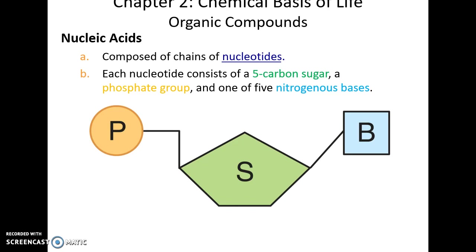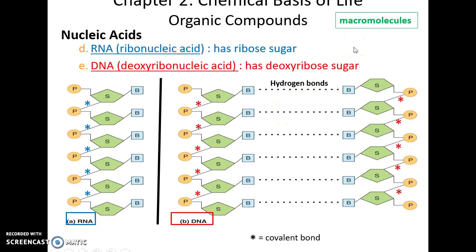Nucleic acids are made up of the monomer called the nucleotide. A nucleotide has a phosphate group attached to a five-atom ring sugar, and then a nitrogenous base also attached to that ring. Long chains of nucleotides make up nucleic acids. There are two main kinds: RNA (ribonucleic acid), which uses the sugar ribose, and DNA (deoxyribose nucleic acid), which uses the deoxyribose sugar. RNA tends to form long single chains, while DNA has two chains that interact via hydrogen bonding, giving a double helix structure.